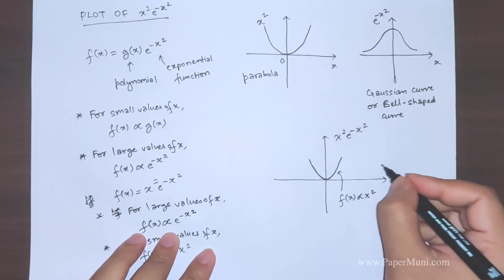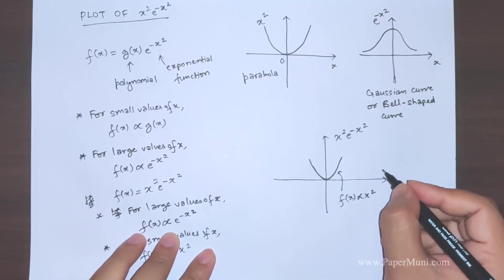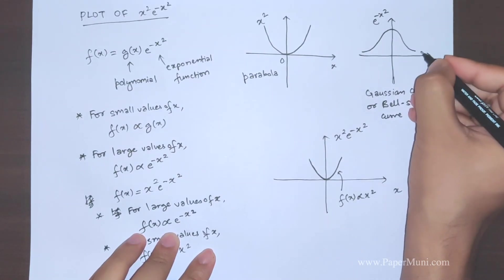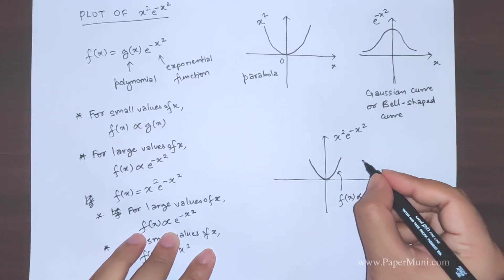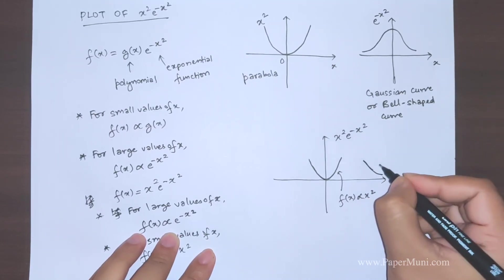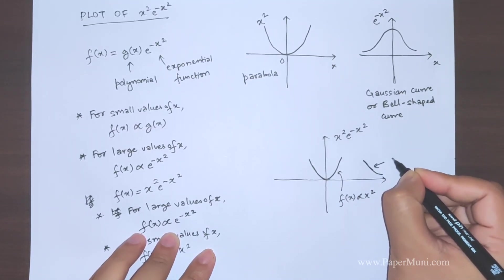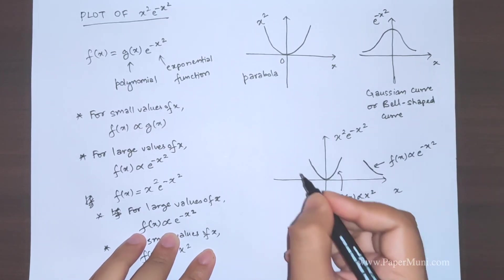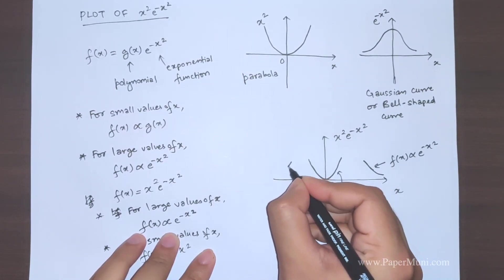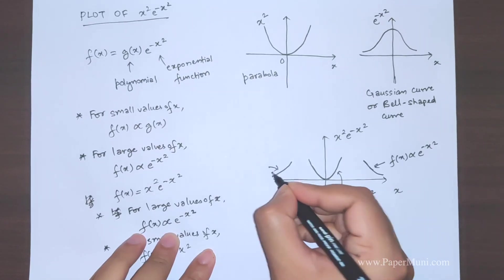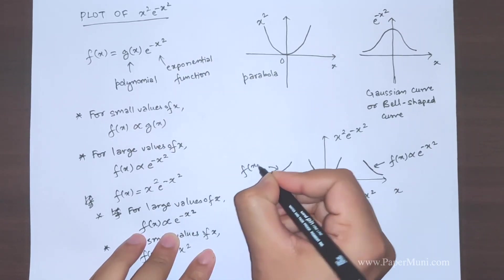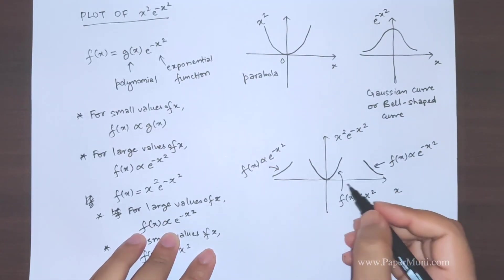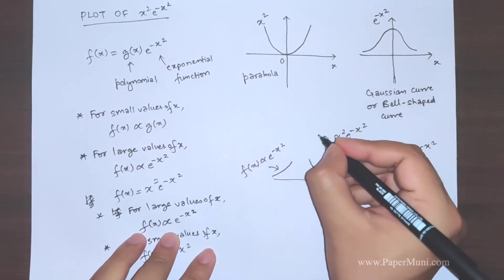Now for large values of x it should follow this graph. So this graph will look like this. This part the function is proportional to exponential and on this part also the same behavior. Because this is an even function so it is symmetric about y-axis. This is the y-axis.